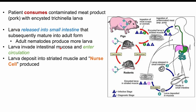In some patients, the larvae are deposited into their own striated muscle — their own skeletal muscle. This can be anywhere in the body, including the arms or the legs. The larvae are deposited into that striated muscle and then a nurse cell is produced — the patient's own cell used to nourish the larvae.